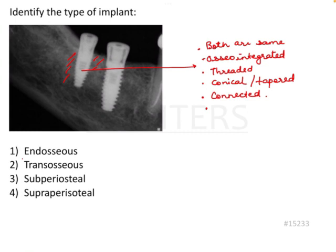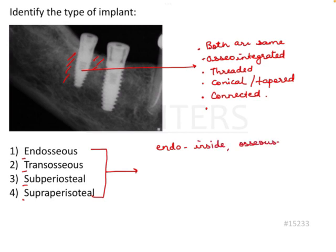Now let's look at the options. The first option is endosseous implant, second is transosseous implant, third is subperiosteal implant, and fourth is supraperiosteal implant. Let's break down these terminologies. Endosseous: 'endo' means inside, 'osseus' means bone. So are these present inside the bone? Yes — the answer could possibly be endosseous implant.